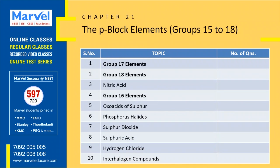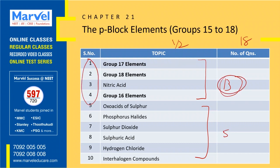P-Block: Groups 13 and 14 were already covered in 11th standard. Now we move to groups 15 to 18 in 12th standard — 18 questions total, expecting either 1 or 2. The first 4 topics have 13 questions and the remaining have 5. Groups 16, 17, and 18 are very important. Combined with 11th standard P-Block, you can get maximum 3 questions — 12 marks.